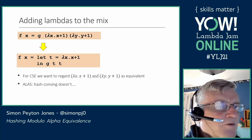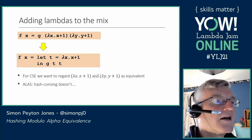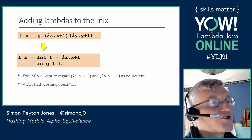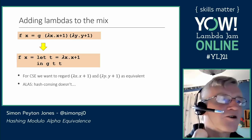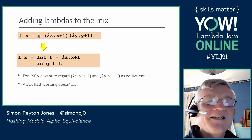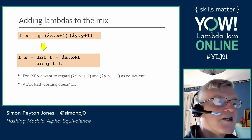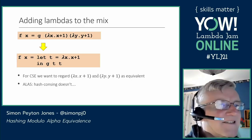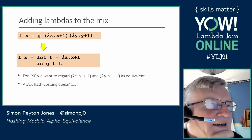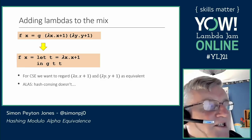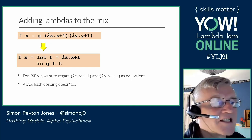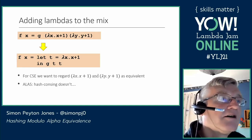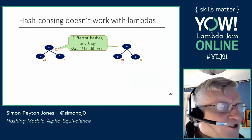Here's an example where we might get a false negative. This program has two sub-expressions — lambda x, x plus one and lambda y, y plus one — and you and I know these are morally the same thing: they are alpha-equivalent. We would like to share those and change it into g applied to t and t with a let. But hash consing will not discover this, because those two expressions have different hashes.